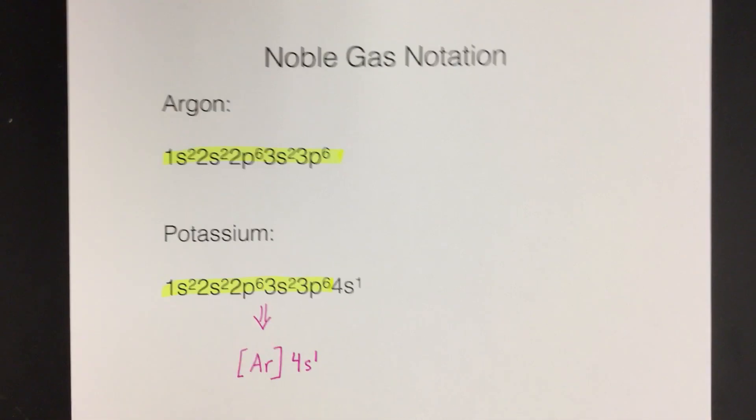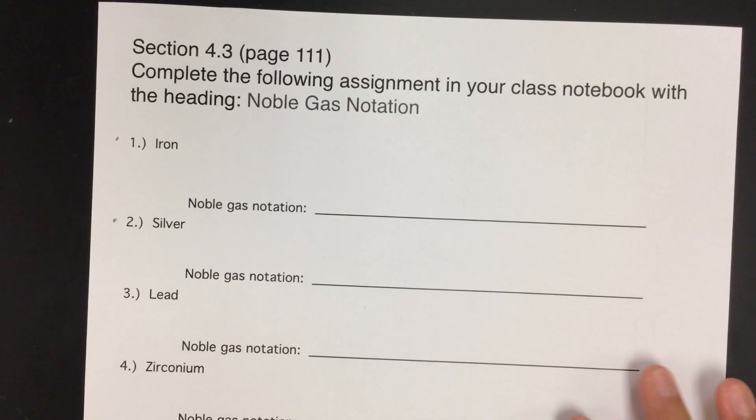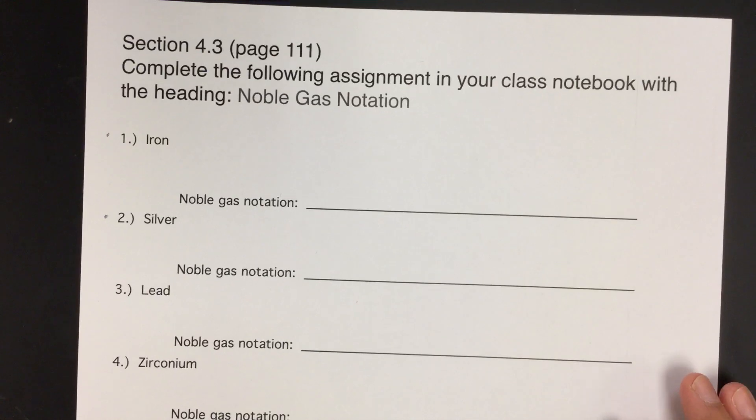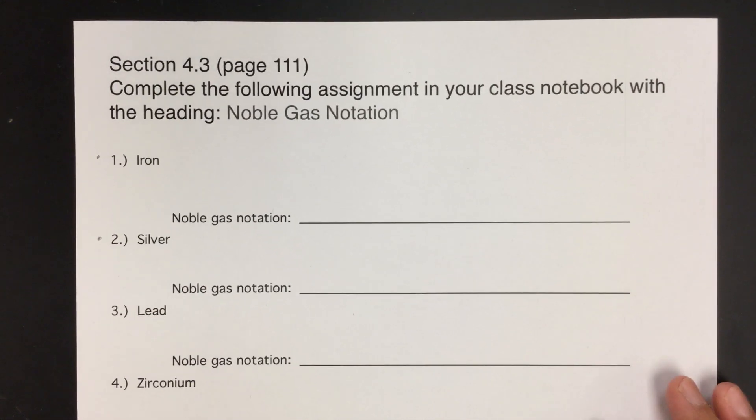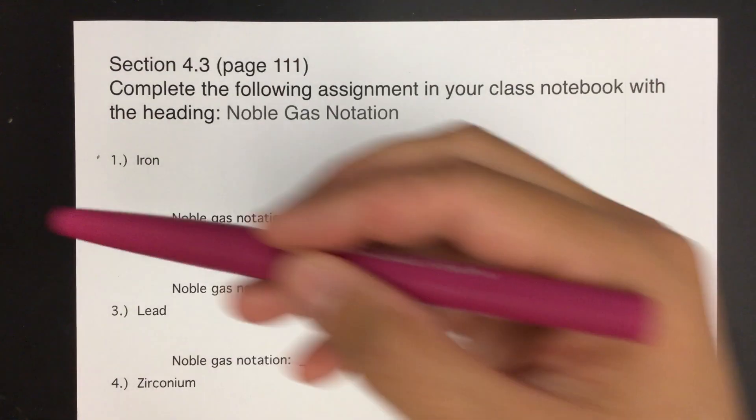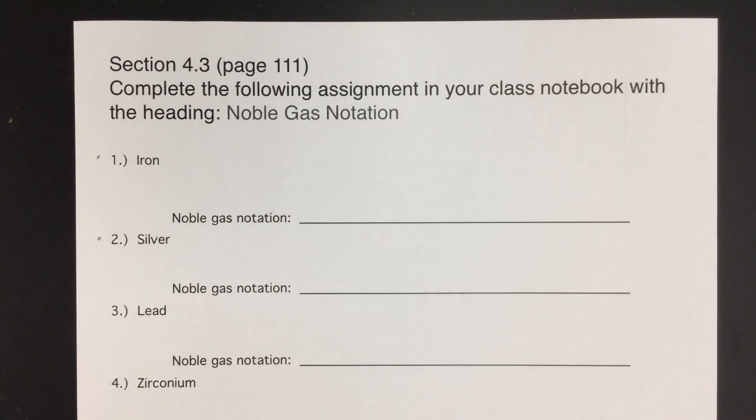Let's put it into use for your homework assignment, the noble gas notation homework assignment. Remember that this is to be copied into your notebook. So you just need to write the heading, and then number one, iron, or Fe, and you're going to write the noble gas notation for iron.